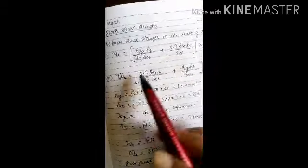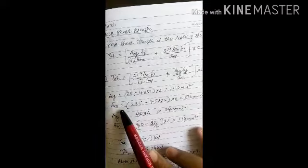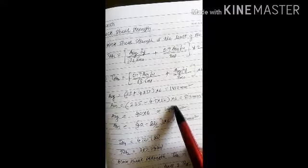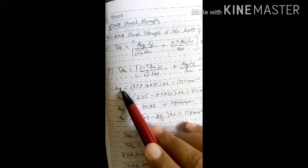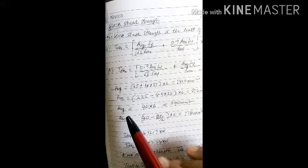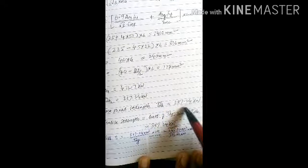For block shear strength (TDB), use the TDB1 and TDB2 formulas and multiply by 2 for double angles. Calculate Avg (gross shear area), Avn (net shear area), Atg (gross tension area), and Atn (net tension area) from the given figure. Substitute all values into the block shear equations to get TDB1 and TDB2; TDB is the lesser of the two, giving a block shear strength of 387.4 kN.